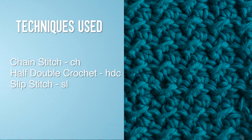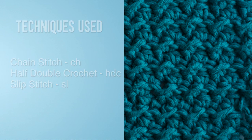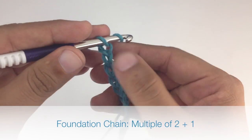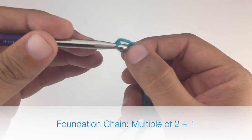For this stitch you'll need to know the following techniques: chain stitch, half double crochet, and slip stitch. To begin this stitch you must create a foundation chain in multiples of 2 plus 1.